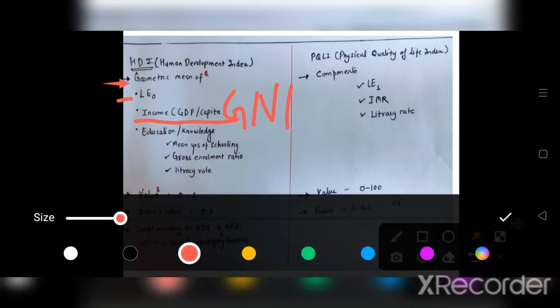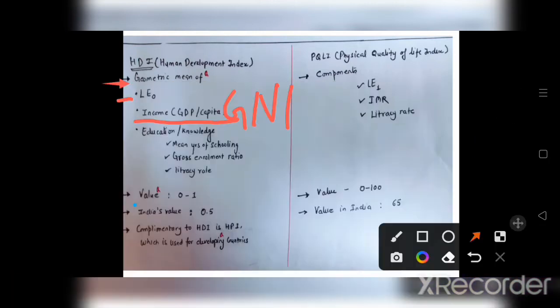Its value ranges from 0 to 1. India's value in 2011 was 0.5 and in 2011-19 India's value came out to be 0.645, that is India's development improved in 2019 compared to 2011.